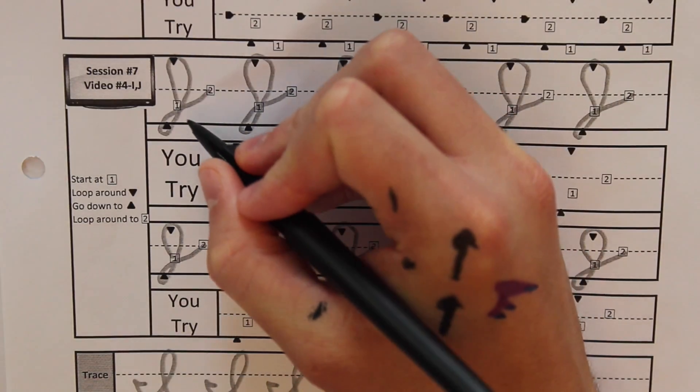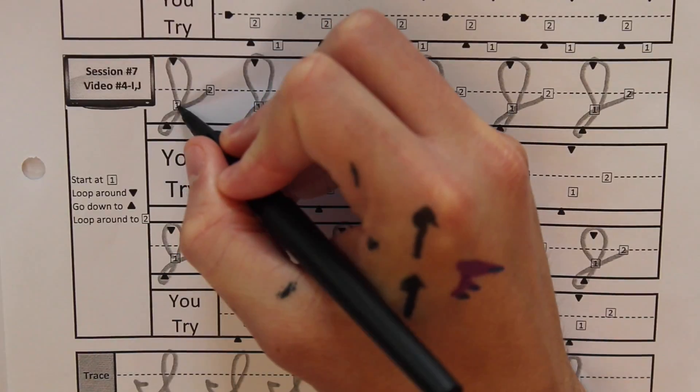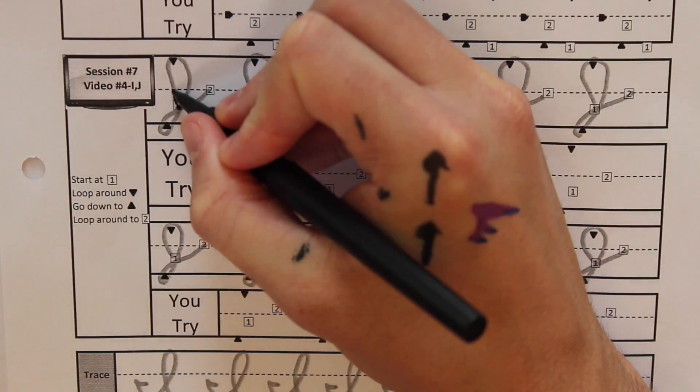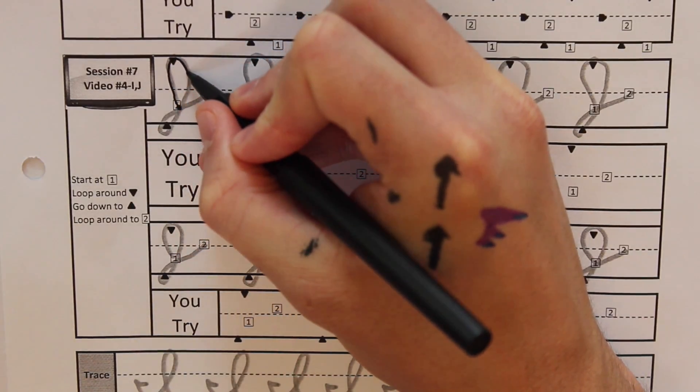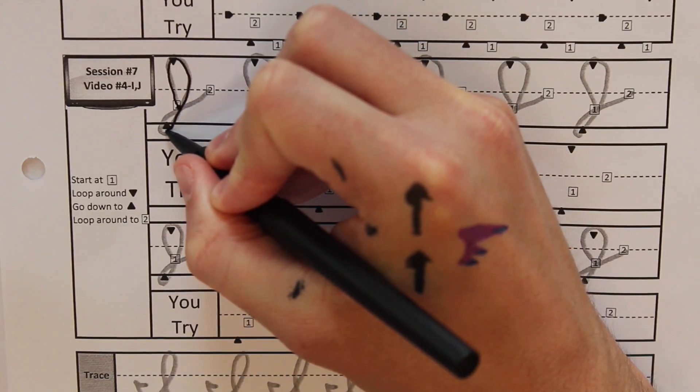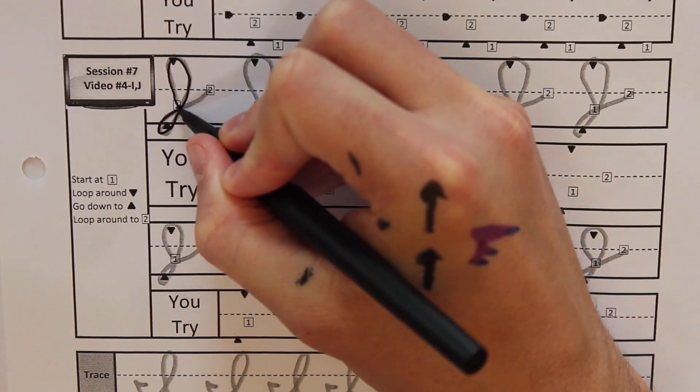Okay, first start at the one. Then loop around the triangle. Then go down to the triangle. Now loop around to the two.